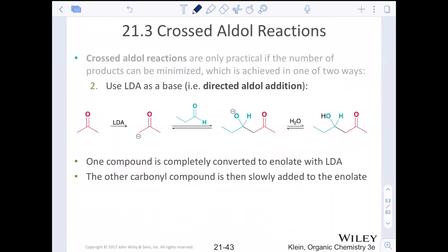If you use LDA as a base, it's called directed aldol addition. You take one aldehyde or ketone, you react it first step number one with LDA that forms the enolate that you desire. Then step number two, you sprinkle in the aldehyde or ketone that you want to cross with it. That forms that beautiful alpha beta new bond. You can either use heat and water, or you can try and achieve the aldol addition reaction only.